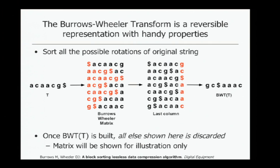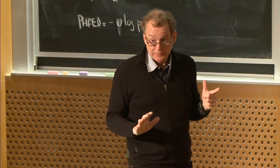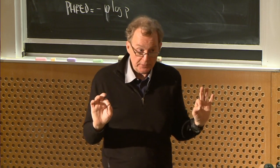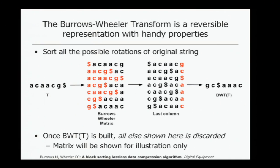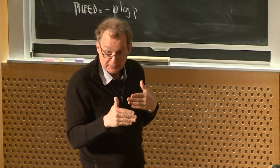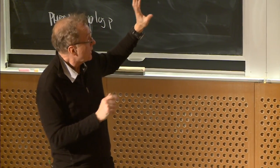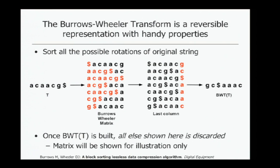You might wonder why you would take a string, consider all rotations, sort them, and take the last column. The intuition is that the Burroughs-Wheeler matrix represents all of the suffixes of T — the red things in the matrix are suffixes of T. When we match a read, we'll match it from its end going towards the beginning, so we're matching suffixes. The dollar sign is the end-of-string character with the lowest lexical sorting order, marking the end of T. We sort the rotations alphabetically — lexically — with seven characters per row.